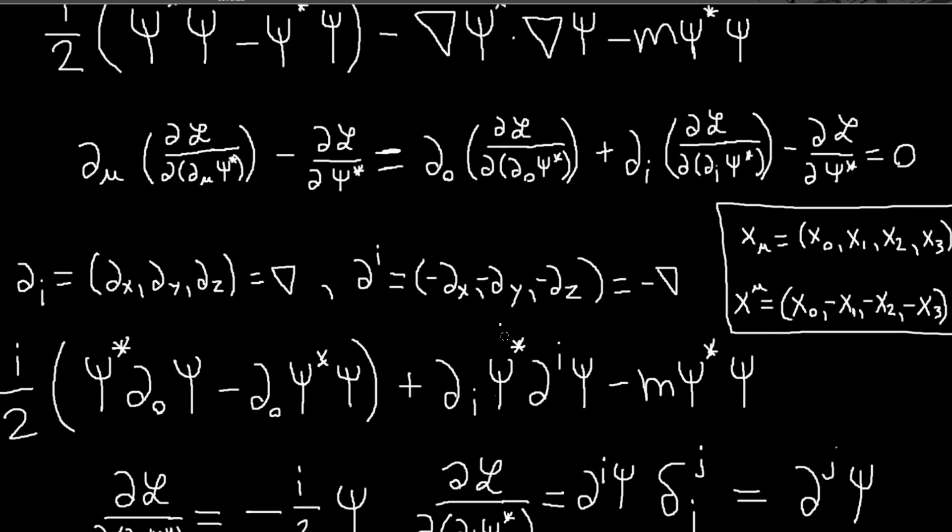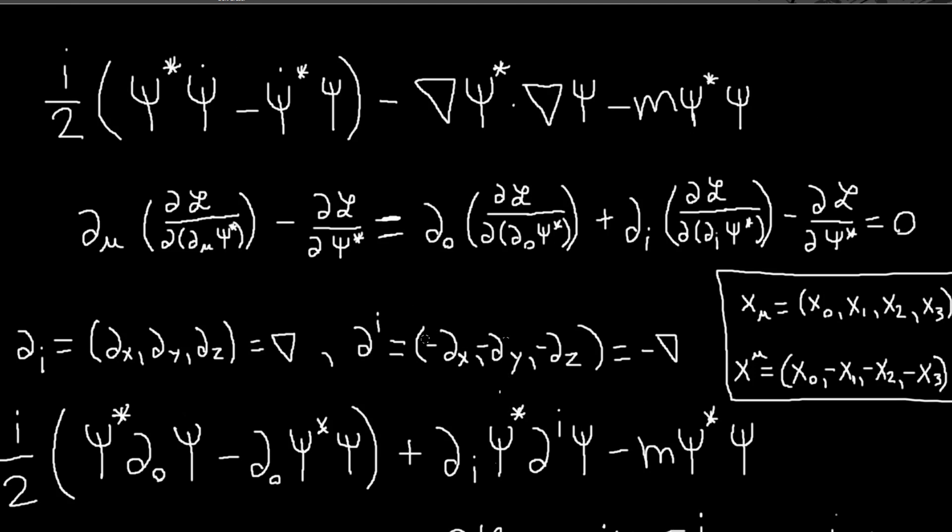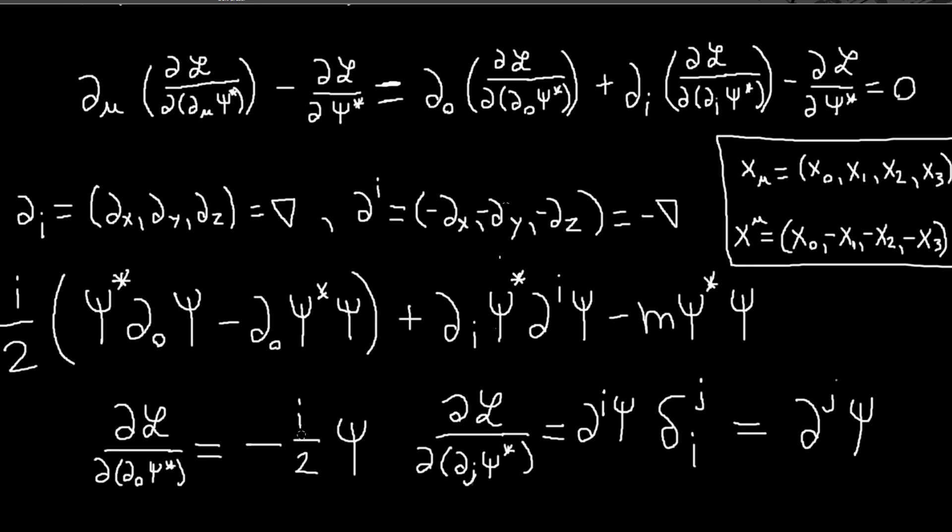Now that it's written out in a more useful form, we can just apply these terms. Just worrying about the time term first: partial with respect to d_0 psi star, that will be just this term. Clearly, I have this i over 2 right here and there's a psi, so it's very easy to see that this is minus i over 2 psi.